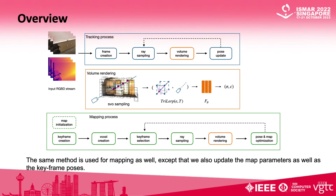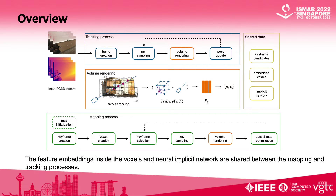We take a sequence of ordered RGBD frames as input. The tracking process consists of a pose update step where the initial pose estimate T0 is iteratively updated to minimize a combined loss of images, depths, and SDF constraints. The same method is used for mapping as well, except that we also update the map parameters as well as the key frame poses. The feature embeddings inside the voxels and neural implicit network are shared between the mapping and tracking processes.